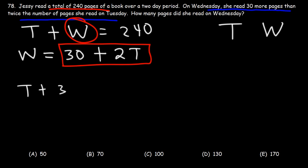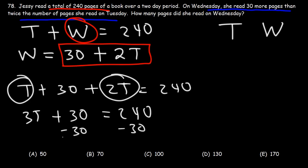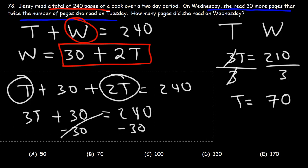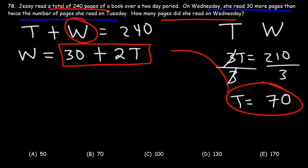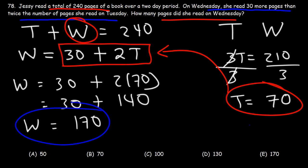Substituting: t + 30 + 2t = 240. Combining like terms: 3t + 30 = 240. Subtracting 30 from both sides: 3t = 210. Dividing both sides by 3: since 21 ÷ 3 = 7, we get 210 ÷ 3 = 70. So she read 70 pages on Tuesday. To find Wednesday's pages: w = 30 + 2 × 70 = 30 + 140 = 170. The answer is 170, answer choice E.